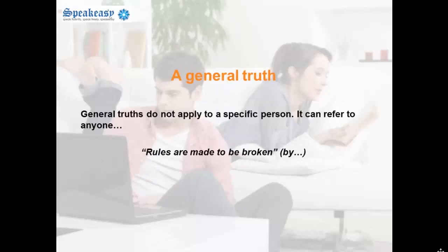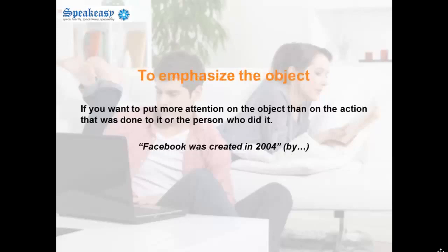General truths do not apply to a specific person — they can refer to anyone. For example: "Rules are made to be broken." You can also use passive if you want to put more attention on the object than on the action or the person who did it. For example: "Facebook was created in 2004."